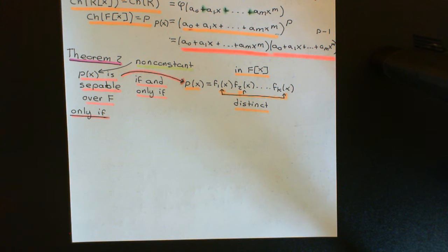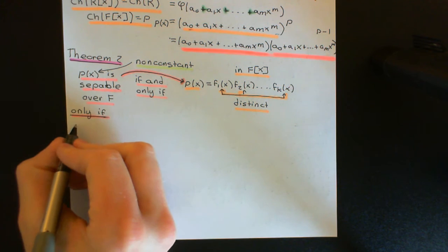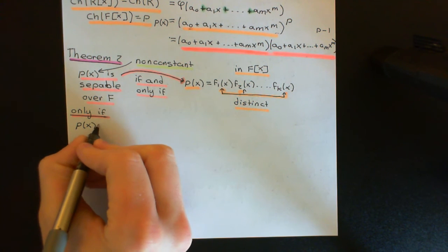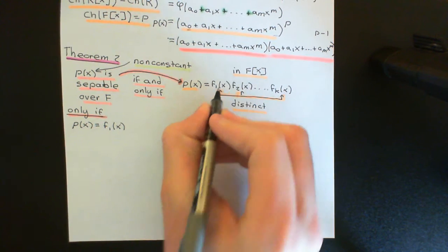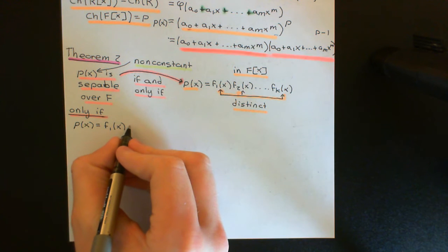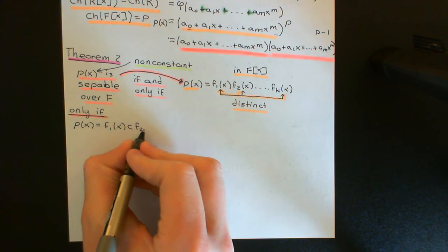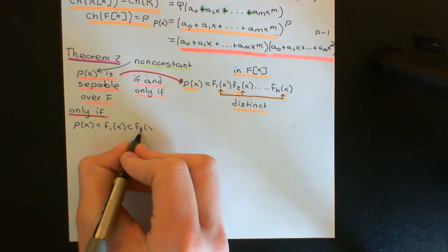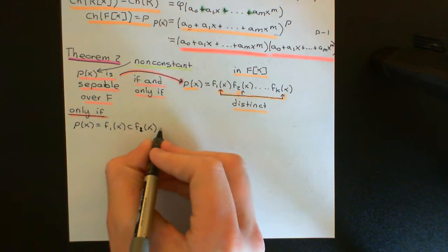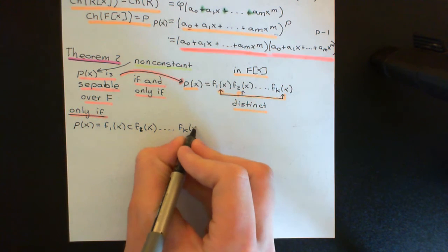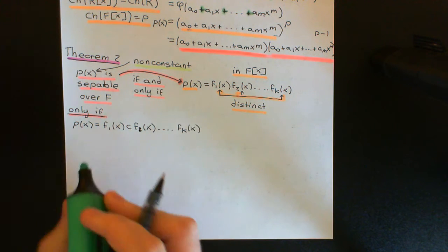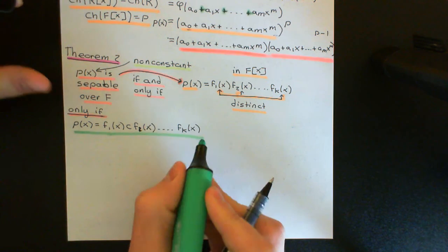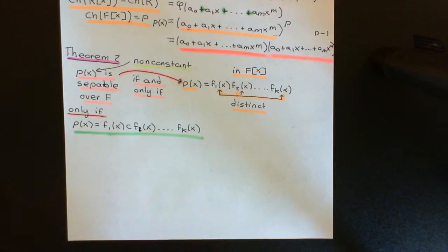Say F₂(X) happens to be an associate of F₁(X), so we can write it as a constant polynomial times F₁(X), and effectively F₁(X) appears twice in the irreducible factorisation — equivalently, we have F₁(X) squared. If we then go up to the splitting field for P(X), all irreducibles factor into linear factors, and F₁(X) squared means all those linear factors appear with multiplicity at least 2.